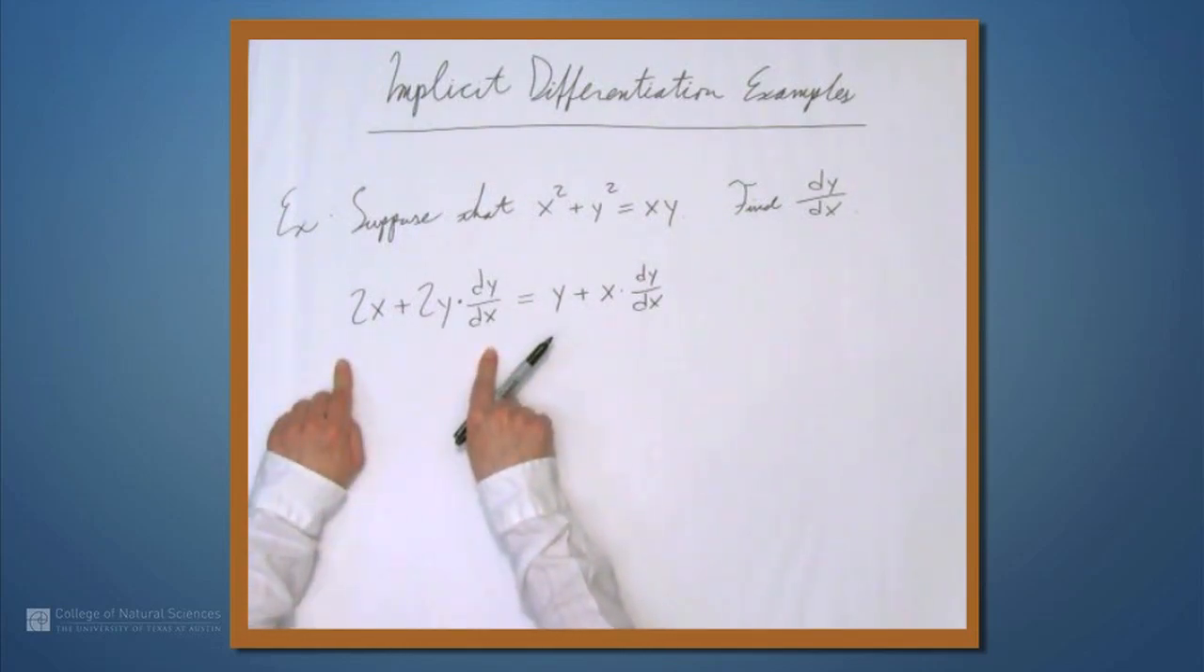Let's move all the terms with dy/dx in it to one side, and all the terms without dy/dx in it to the other. So on this side, we're going to have 2y dy/dx, and we're going to subtract this term from both sides, so minus x dy/dx. And this is equal to y, which was already on this side, and we'll move this 2x to the other side to get minus 2x. Both of the terms on the left-hand side share dy/dx. We can factor that out, and we're left with (2y - x) times dy/dx = y - 2x. Therefore, dy/dx is (y - 2x)/(2y - x).